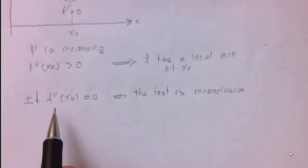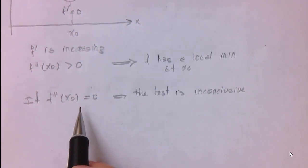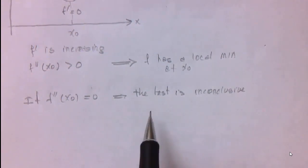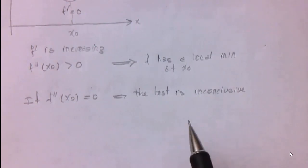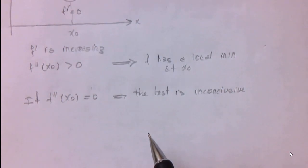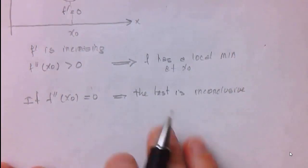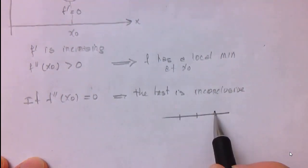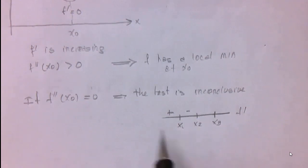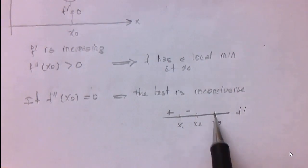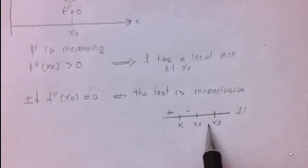So why use the second derivative test? The reason is that whenever we can — when it isn't inconclusive — it is easier. It is easier to use than the first derivative test, mainly with polynomials, because the more derivatives you find, the simpler they get. If given a polynomial and asked to find relative maxima and minima, it is very tempting to use the second derivative test, because we don't have to locate all critical numbers and figure out if the first derivative is positive or negative in each interval. We apply the second derivative test to each critical point where the derivative is zero. If the first derivative is undefined at a critical point, we cannot use the second derivative test there.